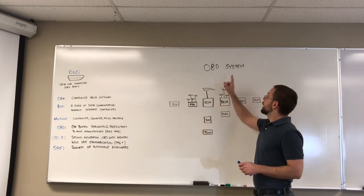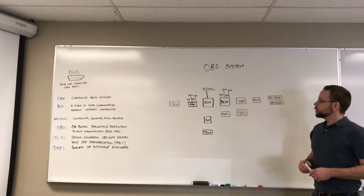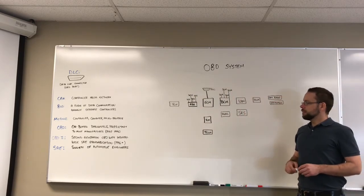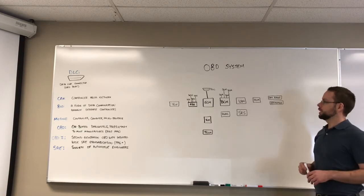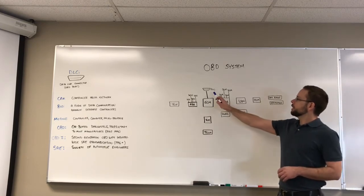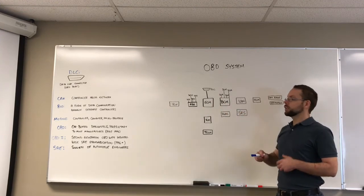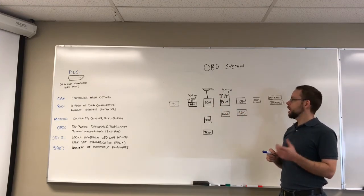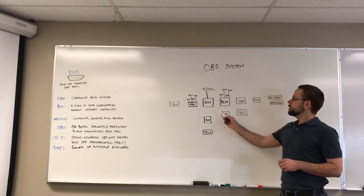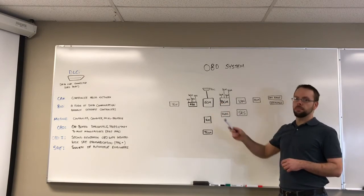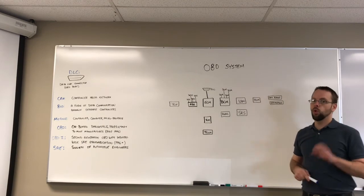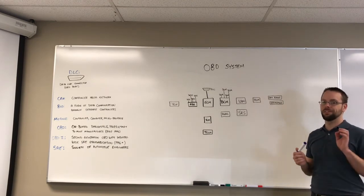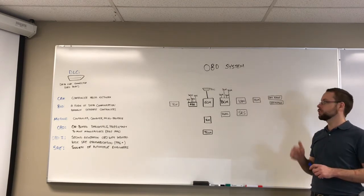So let's have a look here at an OBD system. So this right here is a very simplistic system that could be found on a modern vehicle today. So here we have the data link connector. That's the connector we'll connect our tools to communicate with the vehicle with. That's connected then to the ECM, the electronic control module or engine control module. There's a whole bunch of different terminology that's unfortunately not that standardized within the industry.